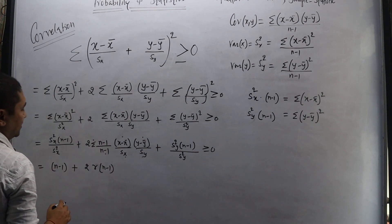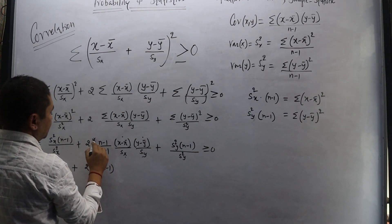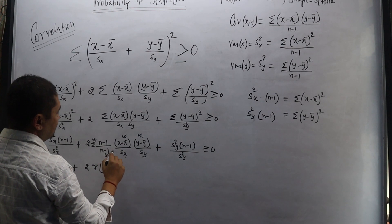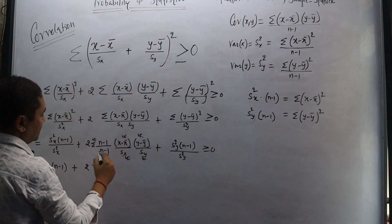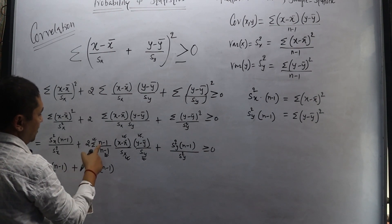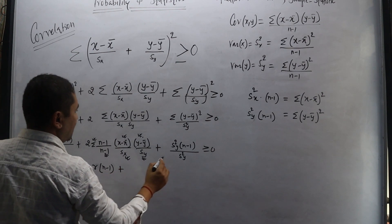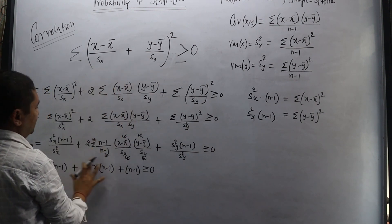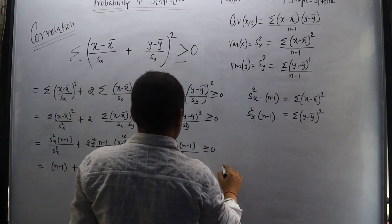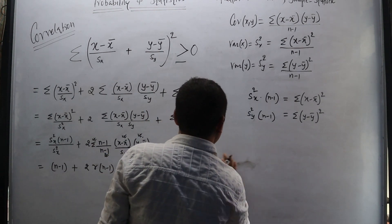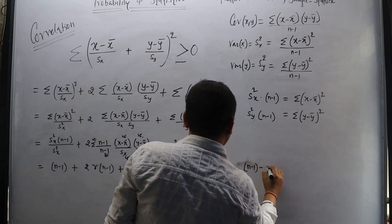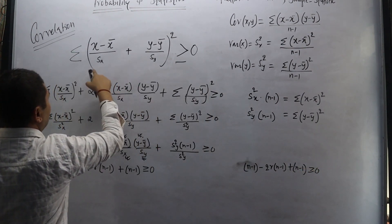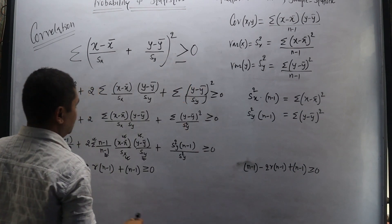We are left with n − 1 terms. The middle term, summation of (x − x̄)(y − ȳ) divided by (n − 1) and then divided by s_x · s_y, gives us the correlation r. So the expression becomes 2(n − 1) + 2r(n − 1) ≥ 0. Since n − 1 is greater than or equal to 0, and the entire expression is a sum of squares, the relationship is preserved.